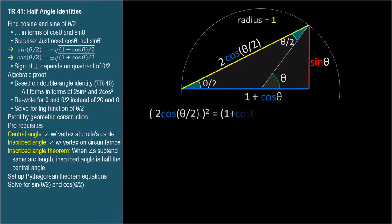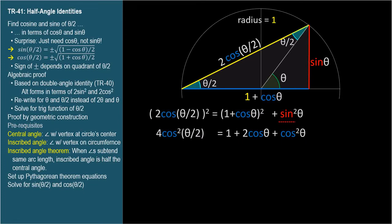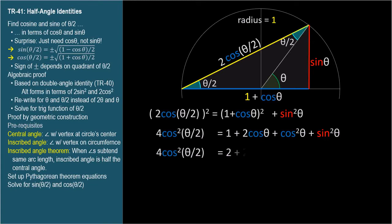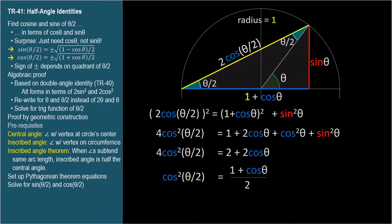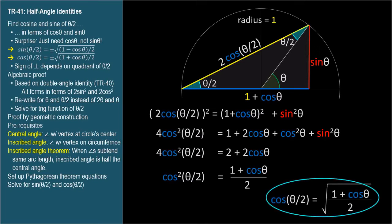Applying the Pythagorean theorem — yellow squared equals blue squared plus red squared — gives: (2 cosine theta over 2)² equals (1 plus cosine theta)² plus sine² theta. Expanding: 4 cosine² theta over 2 equals 1 plus 2 cosine theta plus cosine² theta plus sine² theta. Replacing cosine² theta plus sine² theta with 1 gives 4 cosine² theta over 2 equals 2 plus 2 cosine theta. Dividing both sides by 4 yields cosine² theta over 2 equals 1 plus cosine theta divided by 2. Taking the square root gives the half-angle identity for cosine.